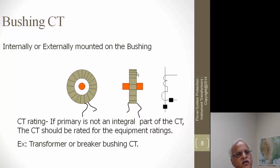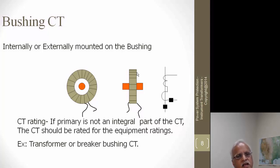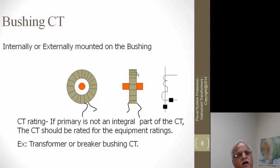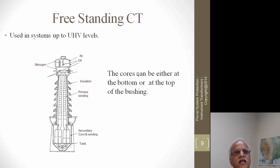The primary rating of a CT is not determined by the CT itself. If it is used on a transformer that can be overloaded to 150 or 160 percent for a short time, the CT must also be able to carry that overload for the same duration. Because the CT is an integral part of that particular breaker or transformer, these CTs must be rated the same as the equipment on which they are mounted.